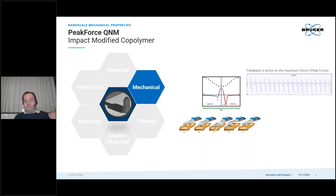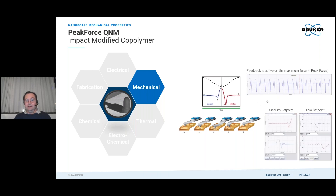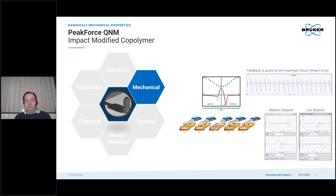Here's an example: if we keep the feedback on the maximum force, we always get the same impact of the tip towards the surface. This is a real force-controlled imaging technique. If you use a slightly higher set point, you can see that the tip pushes a little on the sample surface, which is good for some mechanical measurements. If you use a low set point with hardly any external force, the tip is held on the surface by internal adhesion forces — useful for higher-resolution scans or when you want to be very gentle.